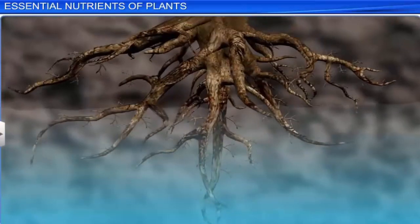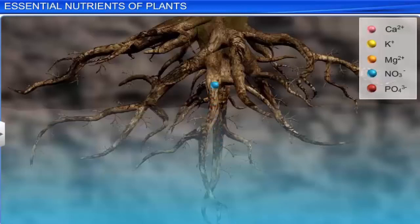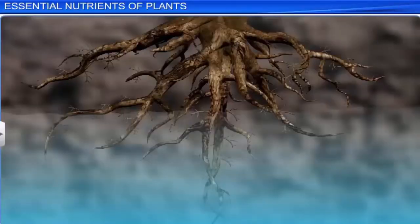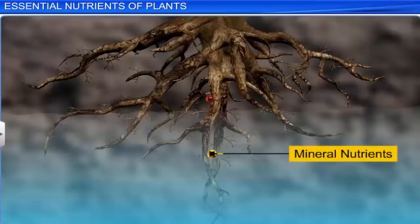Water absorbed from the soil contains dissolved nutrients like nitrogen, phosphorus, potassium, calcium, and magnesium, amongst others. As the sources of these inorganic elements are minerals, the elements are called mineral nutrients.